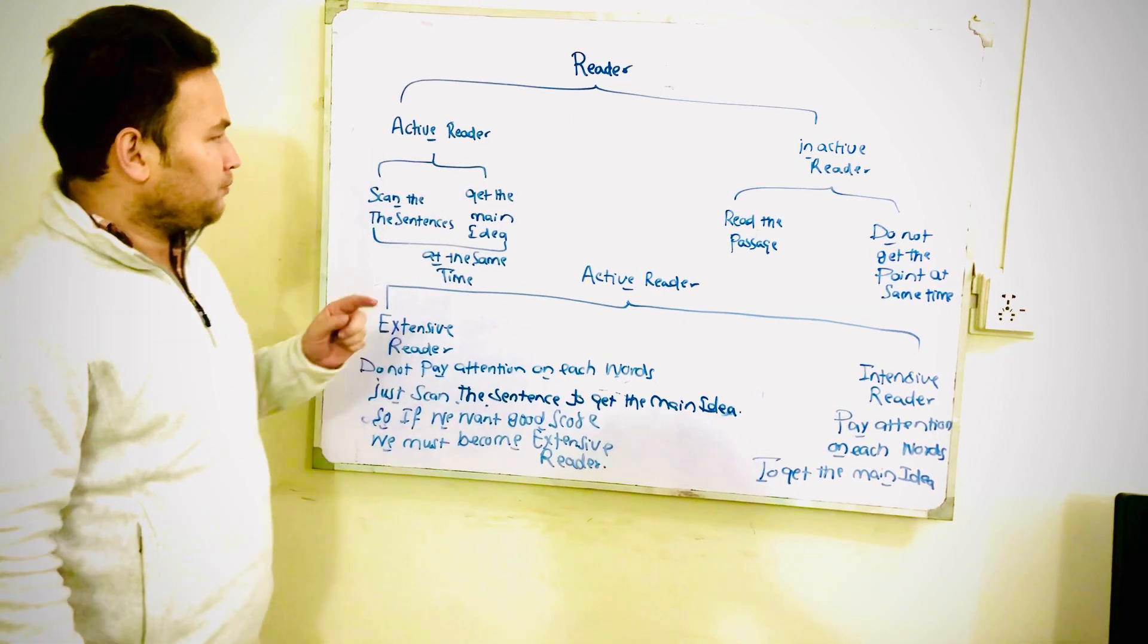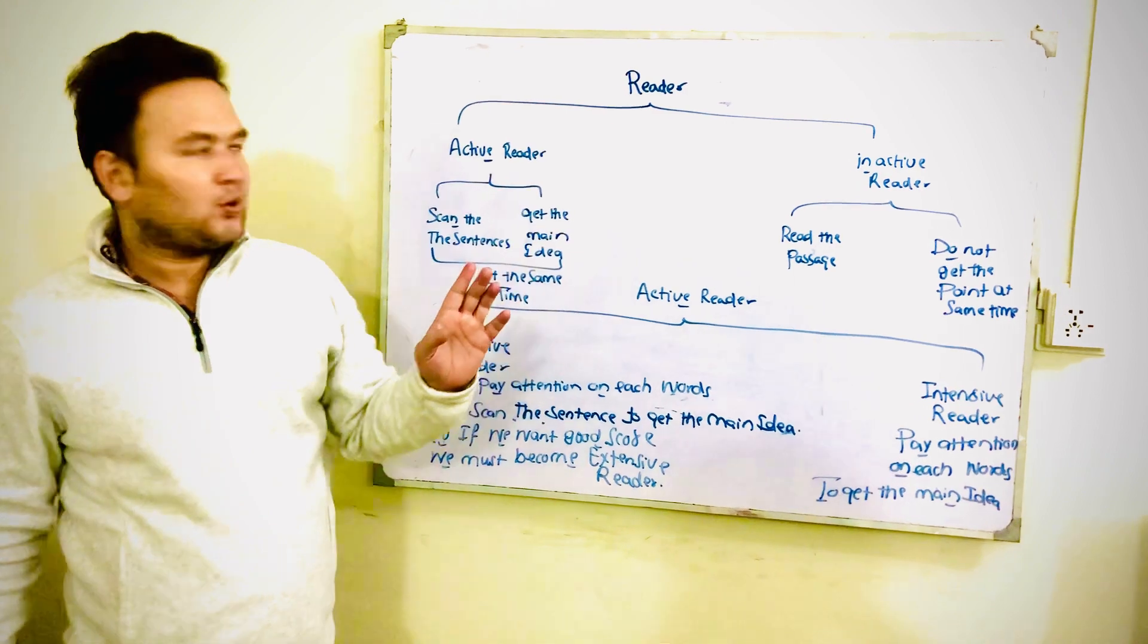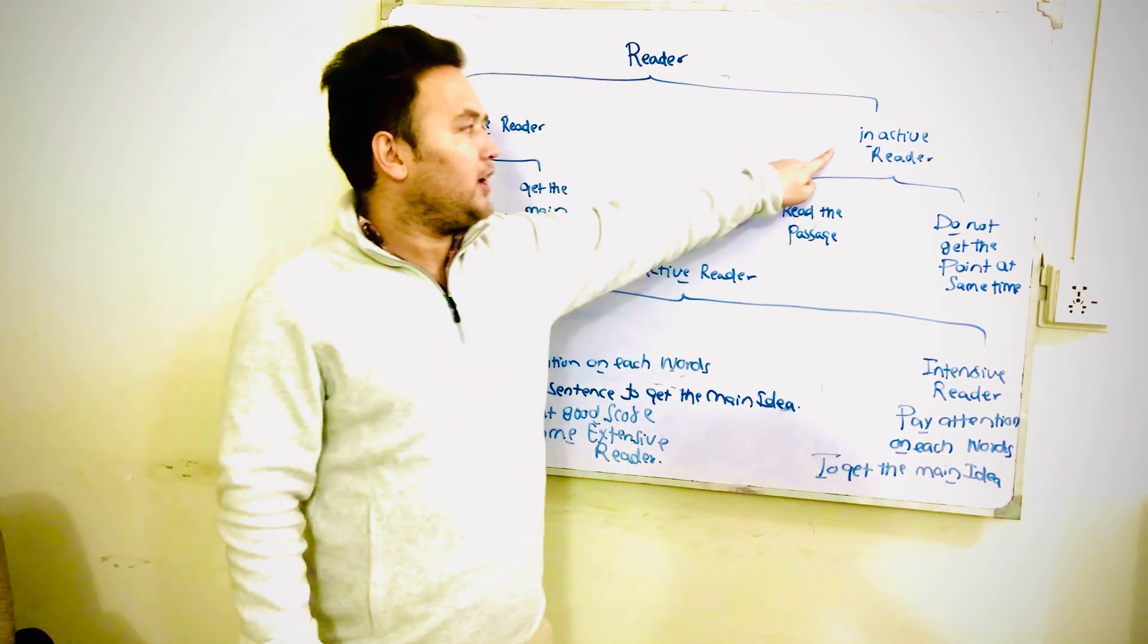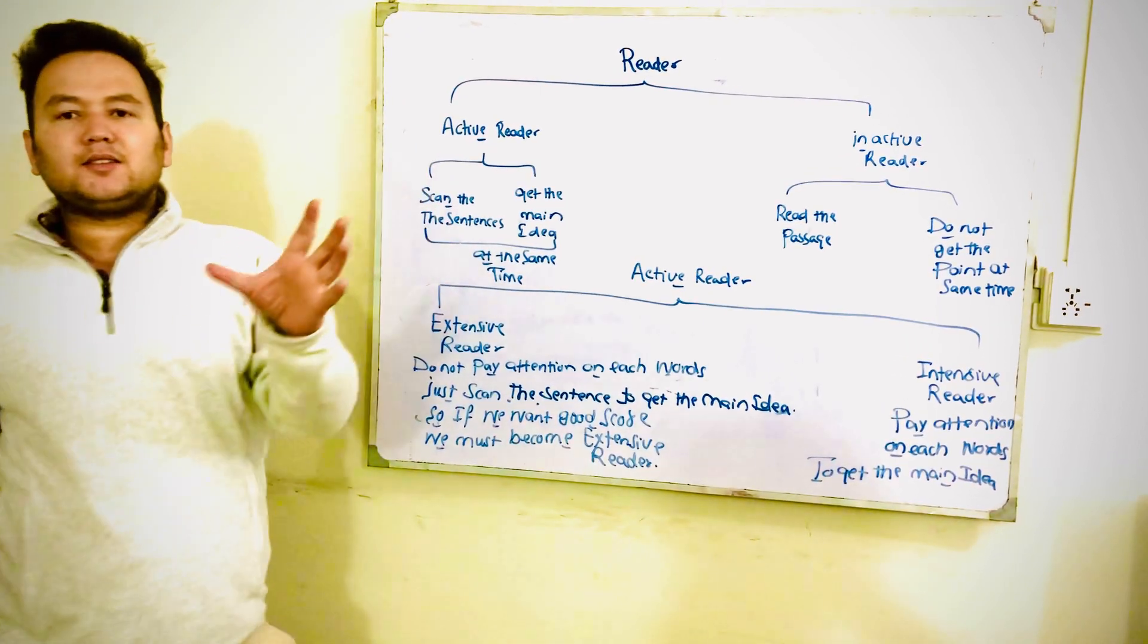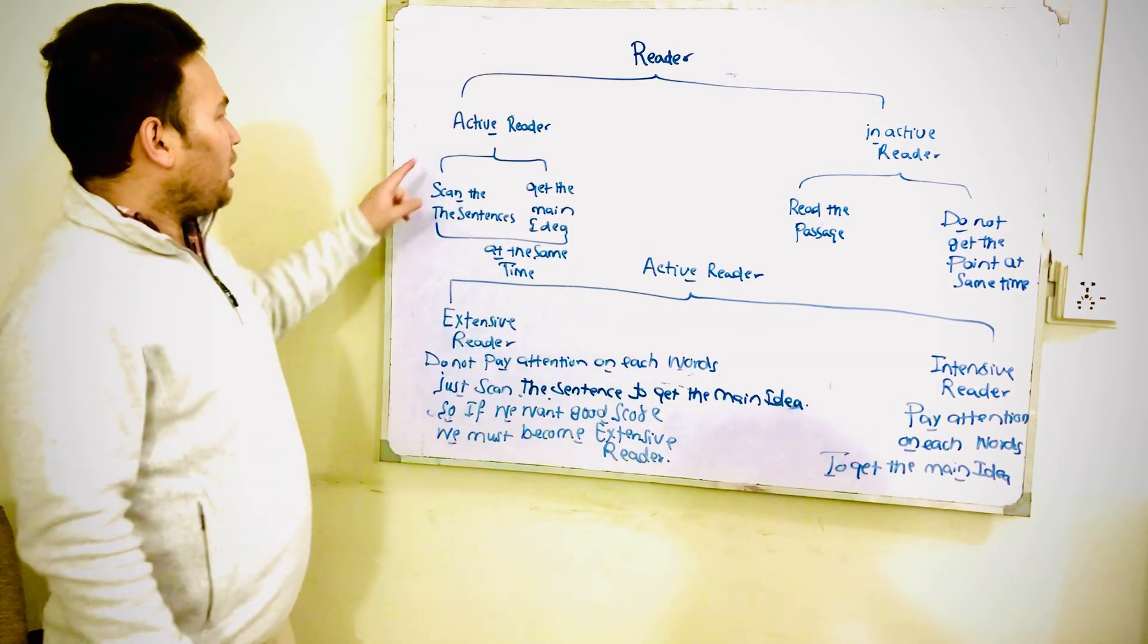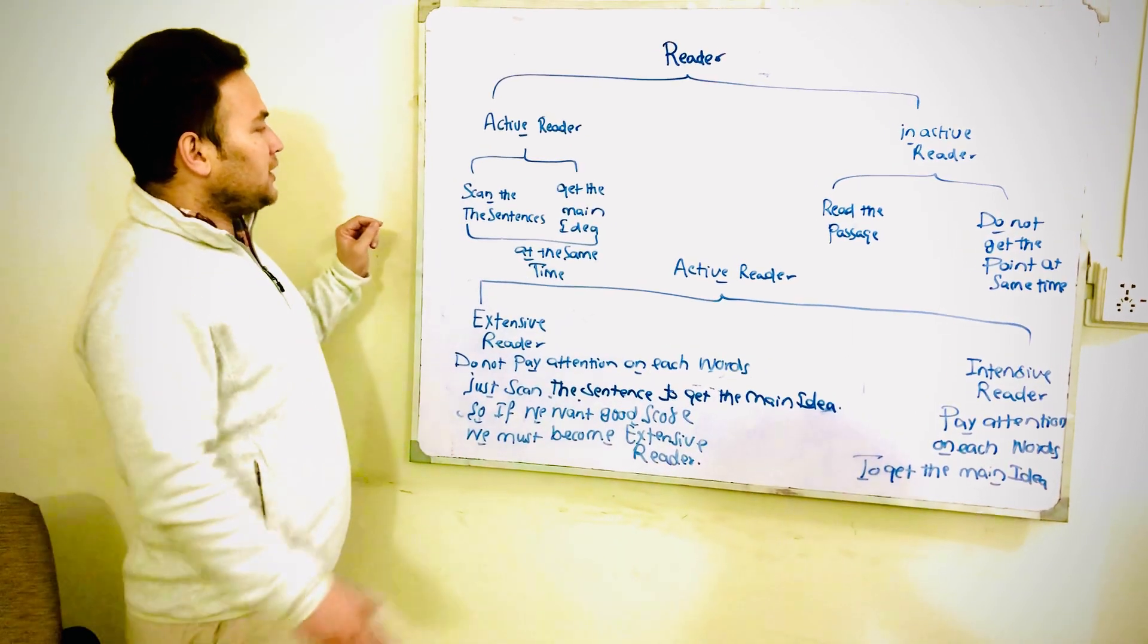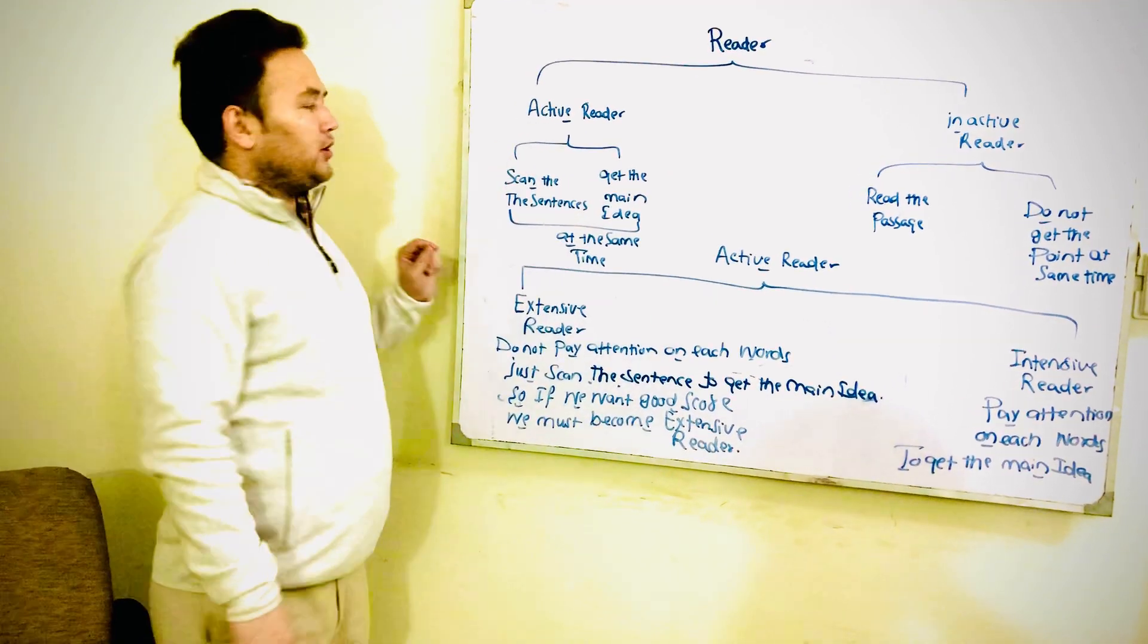We have two types of readers: first, active reader; second, inactive reader. Let's concentrate, let us focus on the active reader. What is an active reader? An active reader means to scan the sentence to get the main point, to get the main idea at the same time.